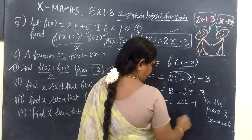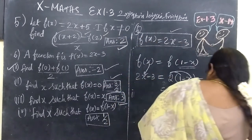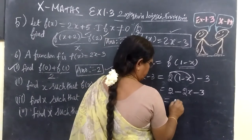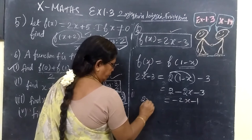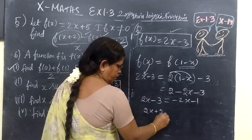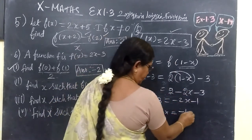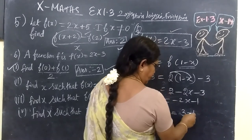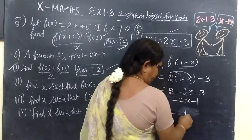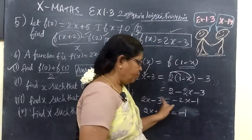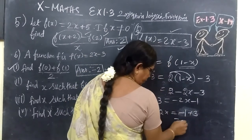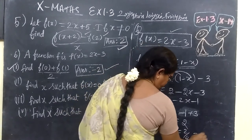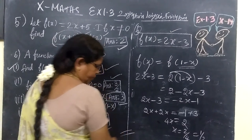So F of 1 minus x equals 2 minus 2x minus 3 equals minus 2x minus 1. Setting F of x equal to F of 1 minus x: 2x minus 3 equals minus 2x minus 1. Adding 2x to both sides: 4x minus 3 equals minus 1. Adding 3: 4x equals 2. Therefore x equals 2 by 4, which cancels to x equals 1 by 2.